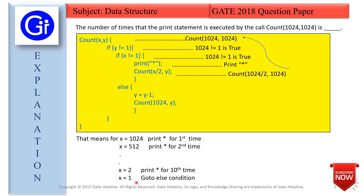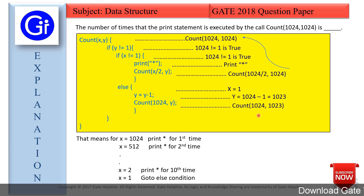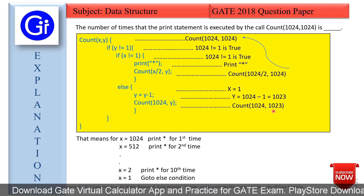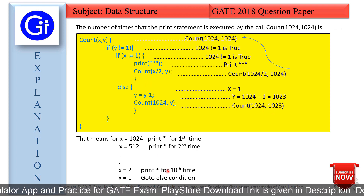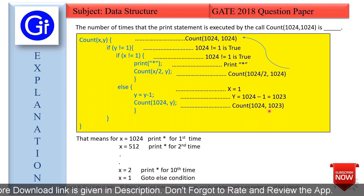When x = 1 for the first time, we go to the else condition. We set y = y - 1, so y becomes 1024 - 1 = 1023. Then we recurse with count(1024, 1023). This completes one full cycle. For y = 1024, we printed the star 10 times. Now we restart with x = 1024 and y = 1023.